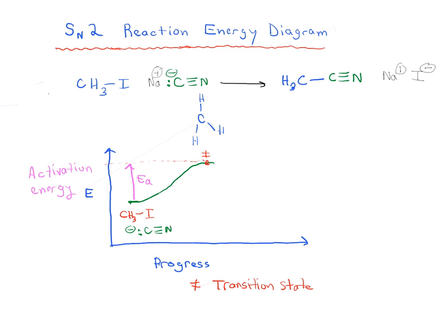If you remember, the SN2 reaction, this goes through what we call a backside attack. So the cyanide is going to attack the CH3I from the side opposite where that iodine is.